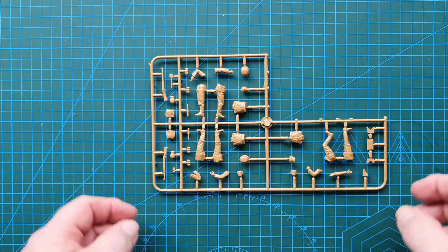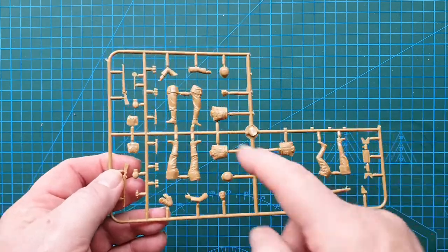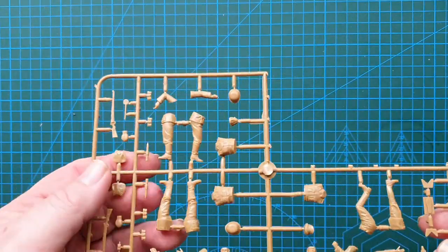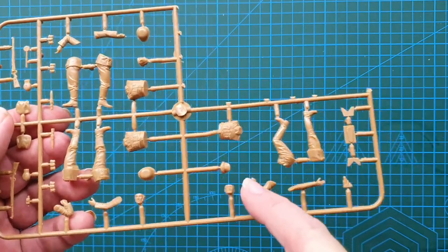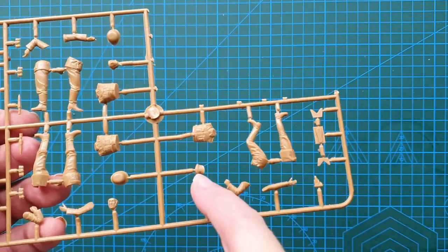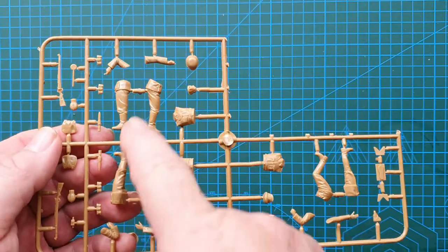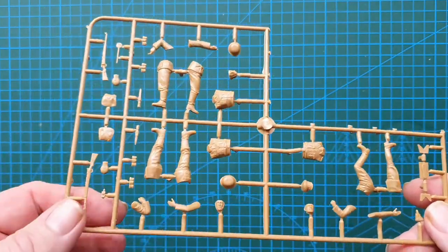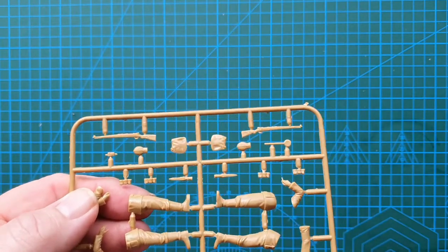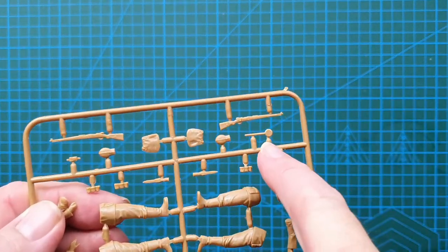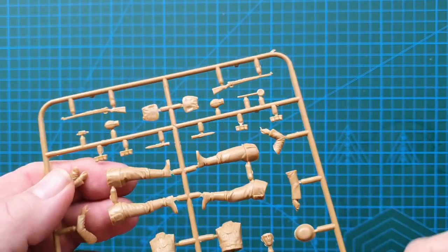So, on this sprue, you'll see you'll get three figures. You have one officer, as you can tell by the cap, plus two soldiers and their rifles, K98s and a police wand.